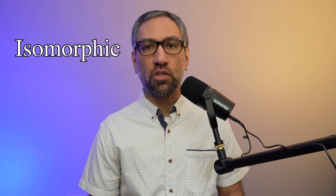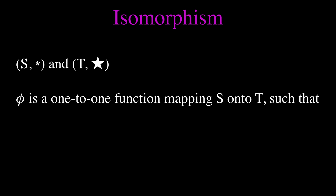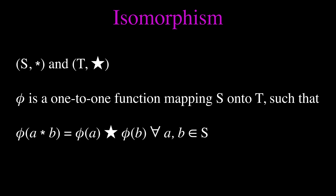Two binary algebraic structures that are structurally alike are said to be isomorphic, which brings us to the definition of isomorphism. Let (S, asterisk) and (T, star) be binary algebraic structures. An isomorphism of S with T is a bijective function φ — that is, a one-to-one function — mapping S onto T such that φ(A asterisk B) = φ(A) star φ(B) for all A, B in S. If this map φ exists, then S and T are isomorphic binary structures. We call this equation the homomorphism property. Thus, if we have a bijective homomorphism, it is called an isomorphism.